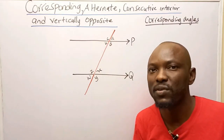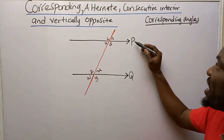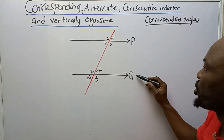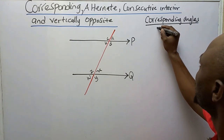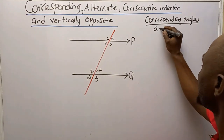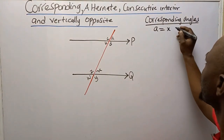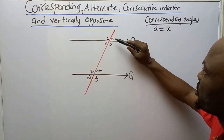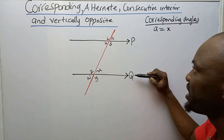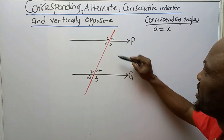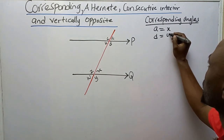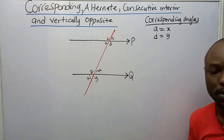Corresponding simply means the same position. If you look at the top of line P, I have A. Now the position of A on line Q is obviously X. So that shows that A and X are both congruent — they are corresponding. In other words, A equals X. They are both corresponding because they are in the same position: A is at the top of P and X is at the top of Q. At the bottom of P I have D, and at the bottom of Q I have Y, so D equals Y. They are corresponding and they are equal.